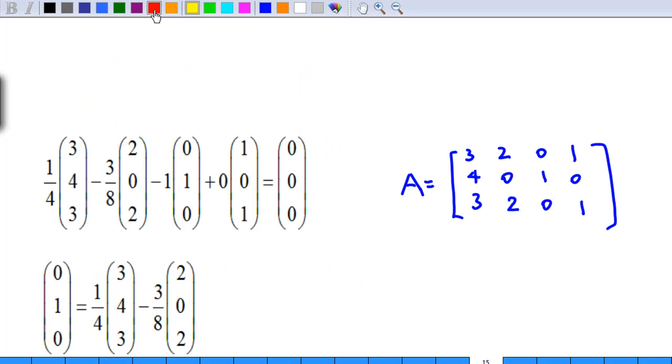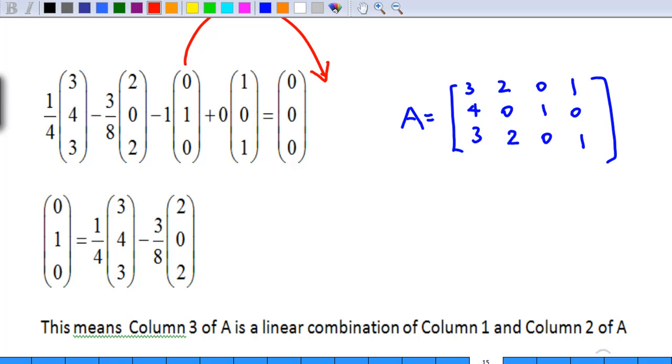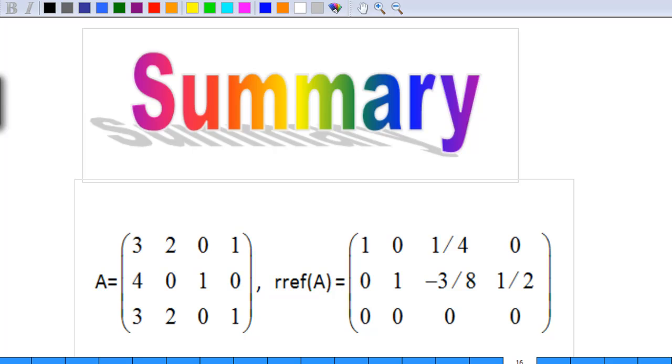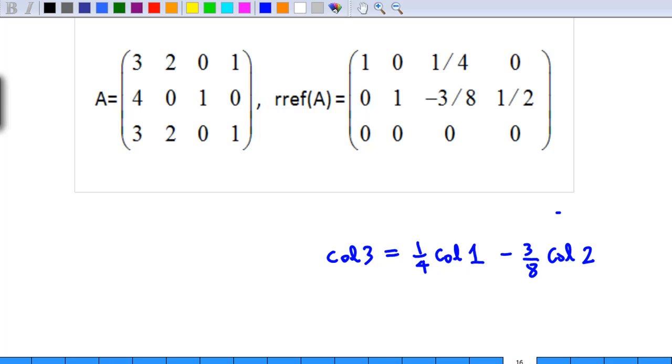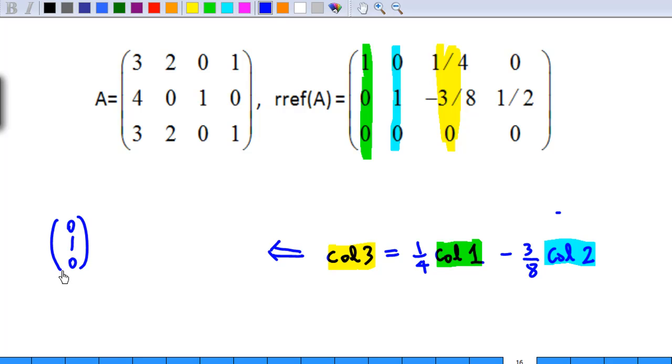So, by rearranging the equation, we will find that 0 1 0 is actually a linear combination of 3 4 3, and 2 0 2. In summary, we are given A, and from the row reduced form of A, we know that column 3 is equal to 1 quarter of column 1 minus 3 over 8 of column 2. And we found out that from the earlier discussion, which means that 0 1 0 is equal to 1 quarter of 3 4 3 minus 3 over 8 of 2 0 2, as I explained earlier.